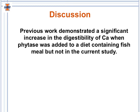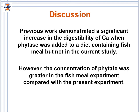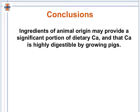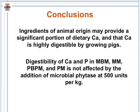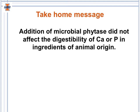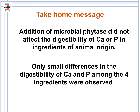Previous work demonstrated a significant increase in the digestibility of calcium when phytase was added to a diet containing fish meal, but that was not observed in the current study. Concentrations of phytase were greater in that previous experiment compared to the present experiment. Ingredients of animal origin may provide a significant portion of dietary calcium, and that calcium is highly digestible by growing pigs. Furthermore, the digestibility of calcium and phosphorus in meat and bone meal, meat meal, poultry byproduct meal, and poultry meal is not affected by the addition of microbial phytase at 500 units per kilogram. The take-home message is that the addition of microbial phytase did not affect the digestibility of calcium or phosphorus in ingredients of animal origin, and only small differences in digestibility were observed among the four ingredients.